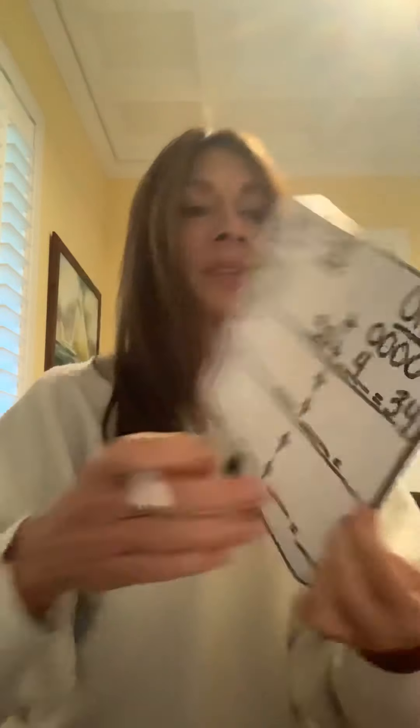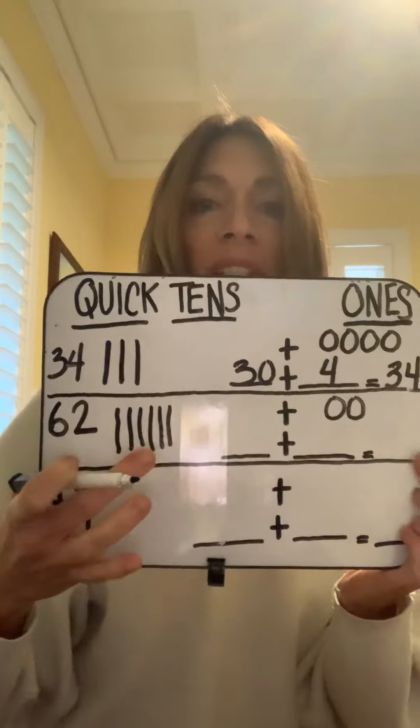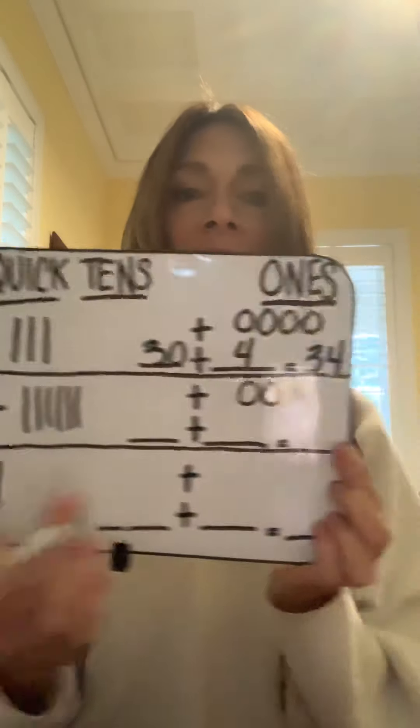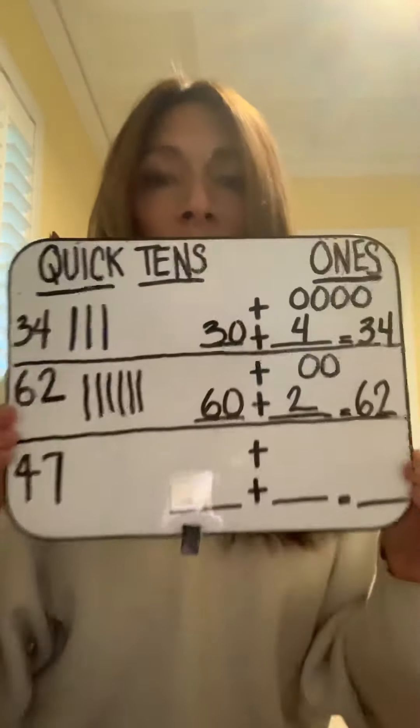Let's do another one: sixty-two. I'm going to draw one, two, three, four, five, six quick tens, and two quick ones — two counters. So I have ten, twenty, thirty, forty, fifty, sixty — six quick tens — and two ones: one, two. That's the same as saying sixty plus two equals sixty-two.